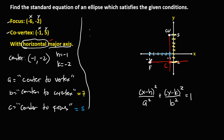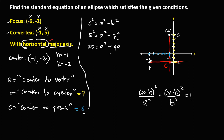To solve for a, we use the formula: c squared equals a squared minus b squared. Since c equals 5, we have 5 squared equals a squared minus 7 squared. Simplifying: 25 equals a squared minus 49. Transposing negative 49 to the left side gives us 25 plus 49 equals a squared, which simplifies to 74 equals a squared.